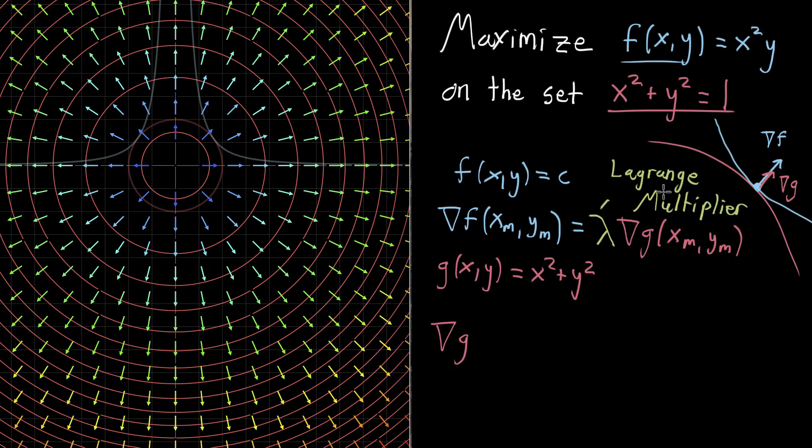So Lagrange multiplier. So there's a number of things in multivariable calculus named after Lagrange. And this is one of the big ones. This is a technique that he kind of developed or at the very least popularized. And the core idea is to just set these gradients equal to each other. Because that represents when the contour line for one function is tangent to the contour line of another.